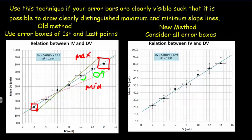In our new method, where we consider all of the error boxes, we're going to start out exactly the same way. In other words, we're going to start out drawing a line from this bottom right-hand corner to this top left-hand corner.